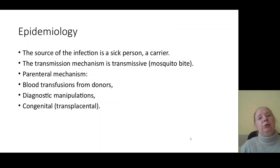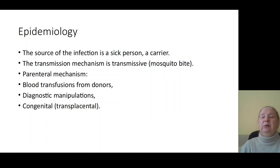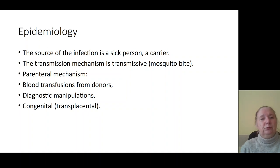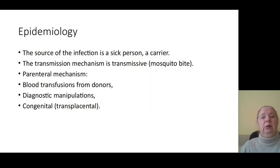Let's speak about the epidemiology of infection. Sources of infection are patients and carriers — more often carriers diagnosed in tropical countries with hot climate. The mechanism of transmission is the bite of mosquitoes — transmissive mechanism. But sometimes, very rarely, there can be a parenteral mechanism — for example, blood transfusion from donors infected by malaria, or diagnostic parenteral manipulation. Sometimes there is a congenital, transplacental variant of infection.